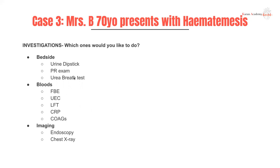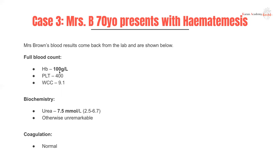What investigations would you like to do? Dipstick, PR exam, urea breath test for H. pylori if suspected. Bloods: FBE — I want to know her hemoglobin; UECs — I want her urea and kidney function; LFTs — does she have any liver issues?; CRP — is there an infection?; and coags — looking at INR to assess risk for further bleeding and any indication of liver damage. For imaging: endoscopy — specifically a gastroscopy for her — and a chest x-ray looking for a pneumoperitoneum from a perforation.